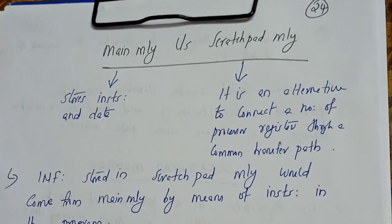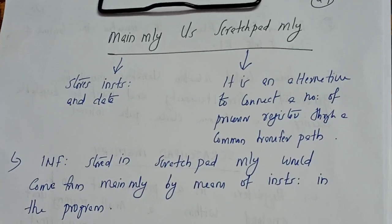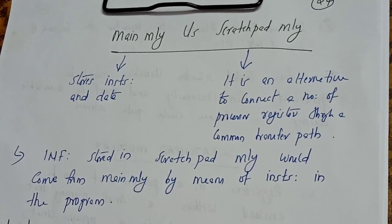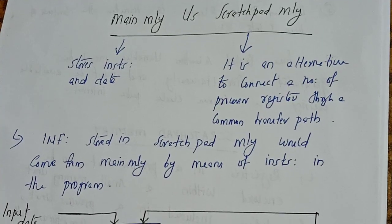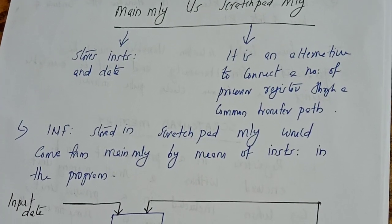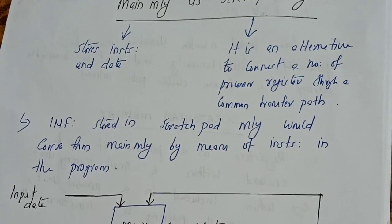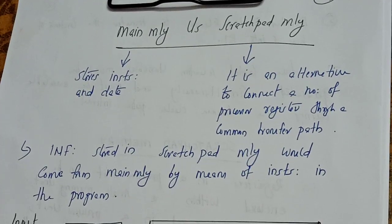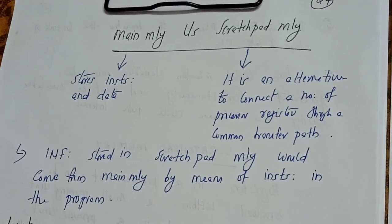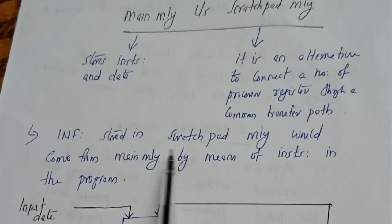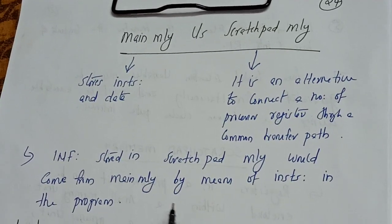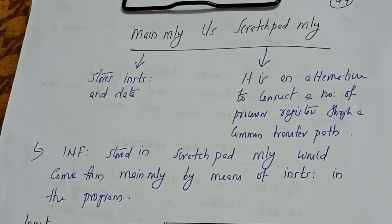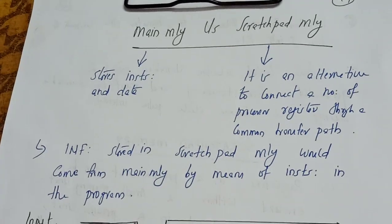Now we will see the difference between main memory and scratchpad memory. The function of main memory is to store instructions and data, whereas scratchpad memory is an alternative to connect a number of processor registers through a common transfer path — its purpose is to store many registers. The information stored in scratchpad memory comes from main memory by means of instructions in the program.